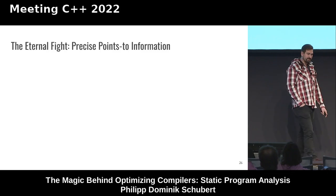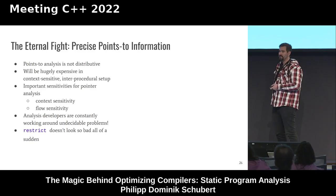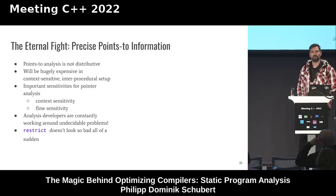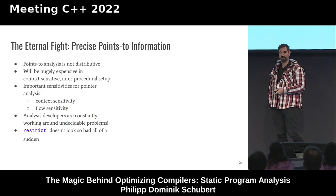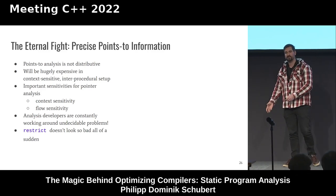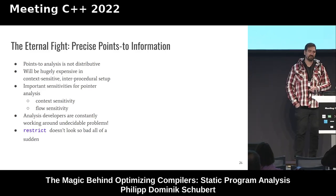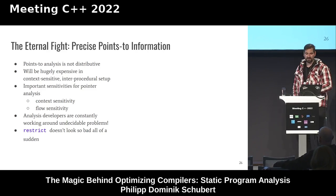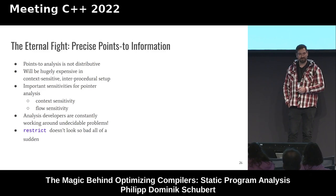The eternal fight is for precise points-to information — it all boils down to that. It's not distributive, so you can't use IDE. If you try to compute it context-sensitively and interprocedurally it's hugely expensive, but that's exactly what we'd like. You would need the call string approach — basically the monotone framework on steroids — attaching a call string whenever you propagate data flow information into a call target, so you know where to return. Pointer analysis is an undecidable problem, like most other types of analyses.